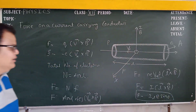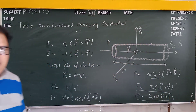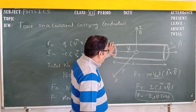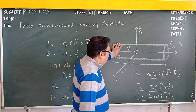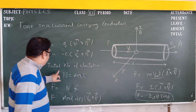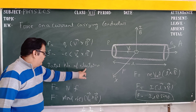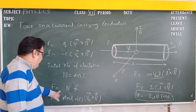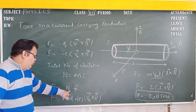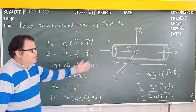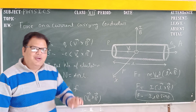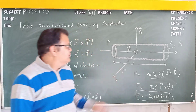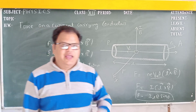Okay students, the conductor is filled with so many electrons. That is why we consider the total number of electrons N equal to nAL, and force F equal to capital N times the force per electron, where e is the electron charge — that is why we put negative charge. That is all for today. Thank you.